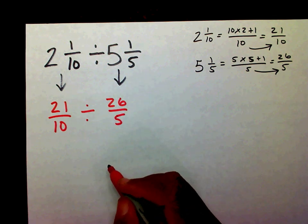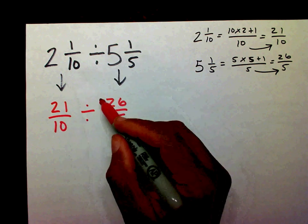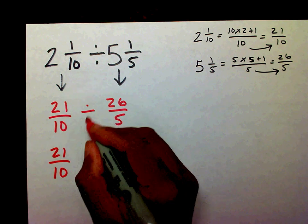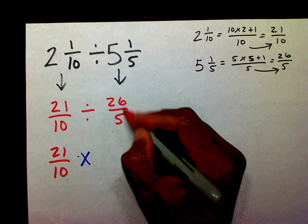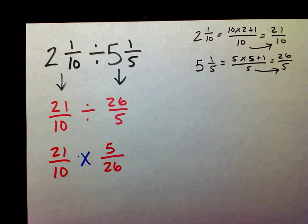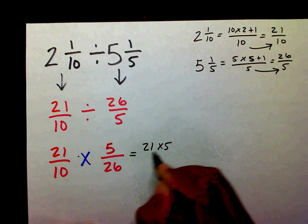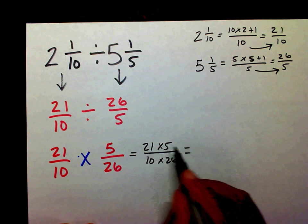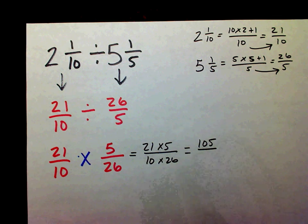Instead of writing two and one-tenths I can write twenty-one over ten, divided by, instead of writing five and one-fifths, twenty-six-fifths. Now I need to change this division problem into a multiplication problem. Leave your first fraction alone, change division to multiplication, and take the reciprocal of twenty-six-fifths, which is five over twenty-six. Multiply across: twenty-one times five is one hundred five, and ten times twenty-six is two hundred sixty.